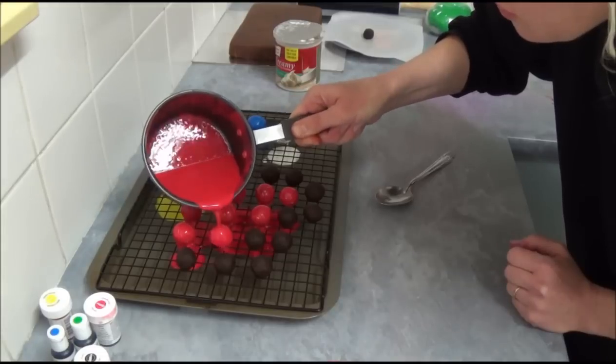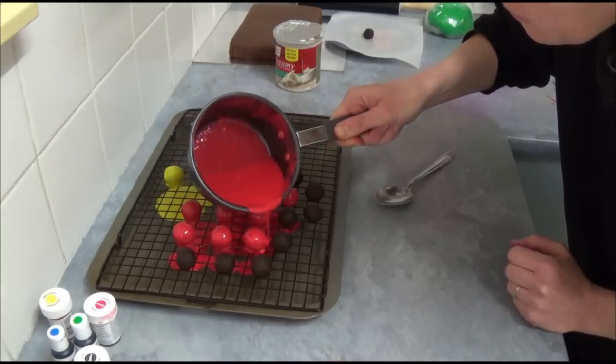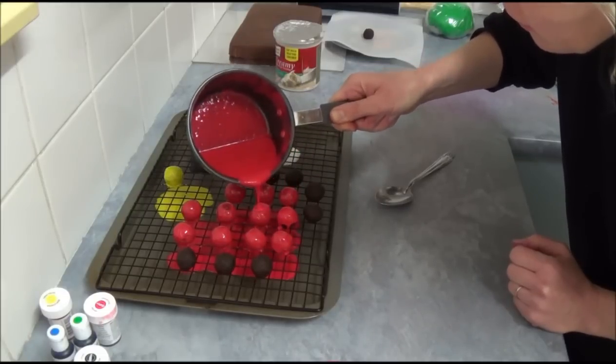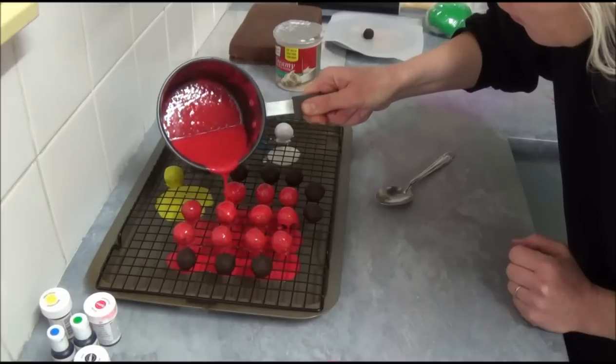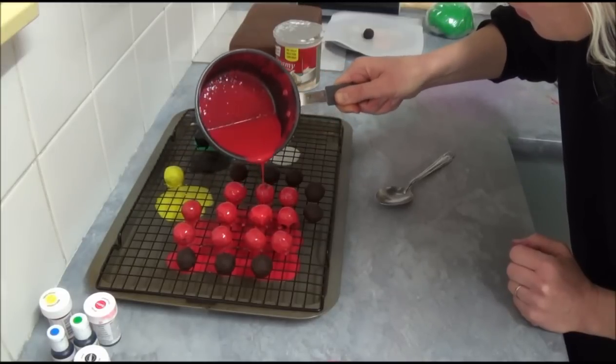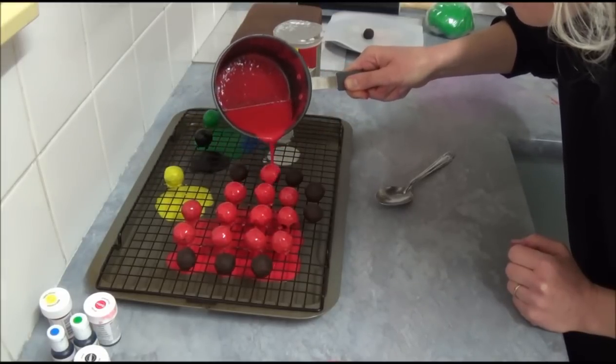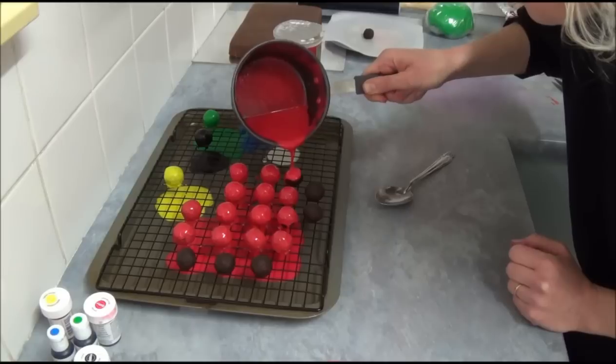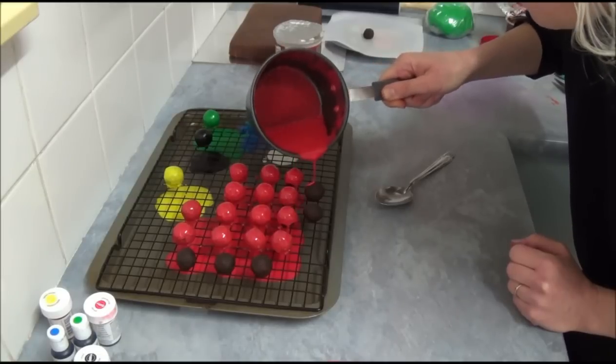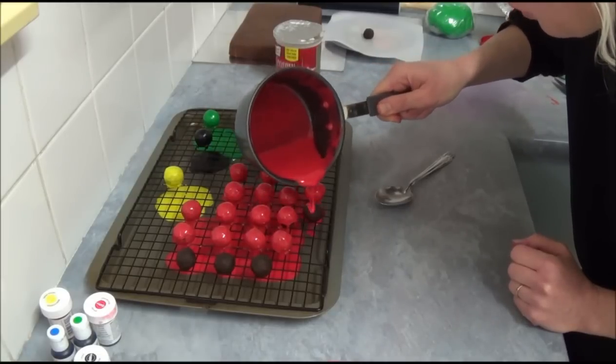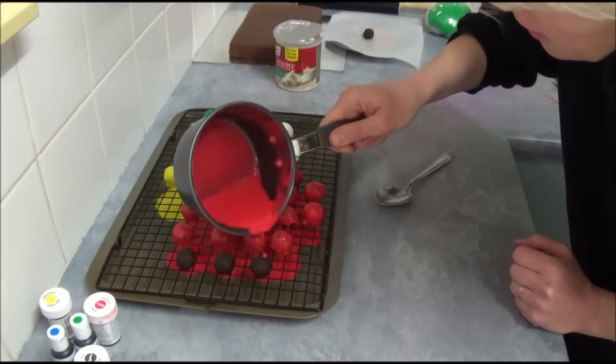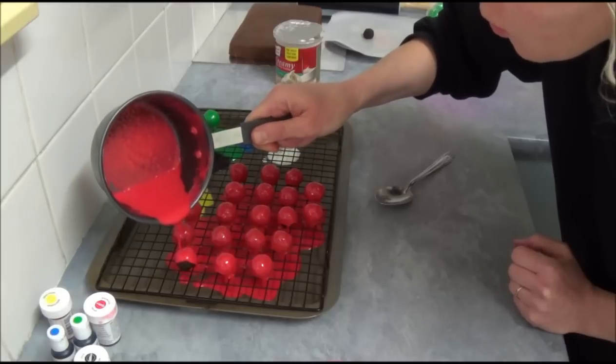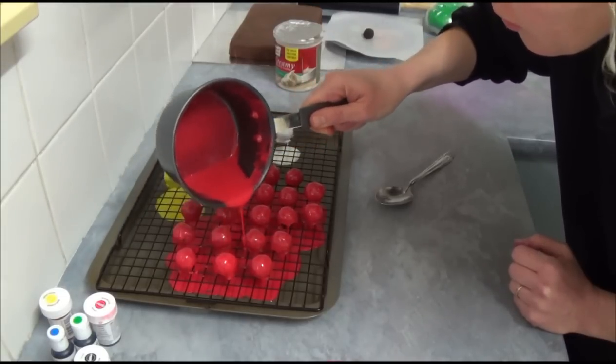It's a really, really quick process. If it starts thickening, place again on top of the stove to get to boiling point. What we do next is we just let these balls completely set.